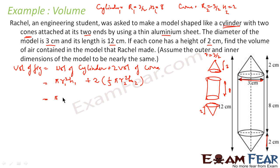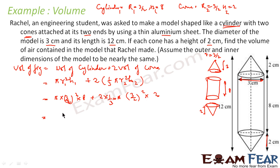Solving: π × (3/2)² × 8 = π × 9/4 × 8 = 18π. For the cone part: 2 × (1/3) × π × (3/2)² × 2 — the 3s cancel and the 2s cancel — giving 3π. So 18π + 3π = 21π.